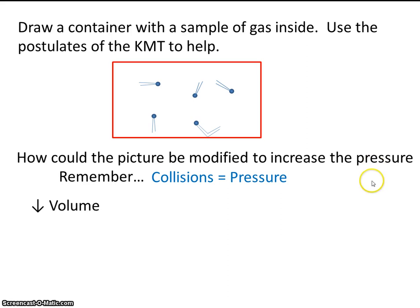Well, here's a few ways. We could decrease the volume. If we shrink the size of this box, well, there'll simply be more collisions because the box will be smaller, and these molecules will be colliding with the walls of the container more frequently. How else could we increase the pressure?